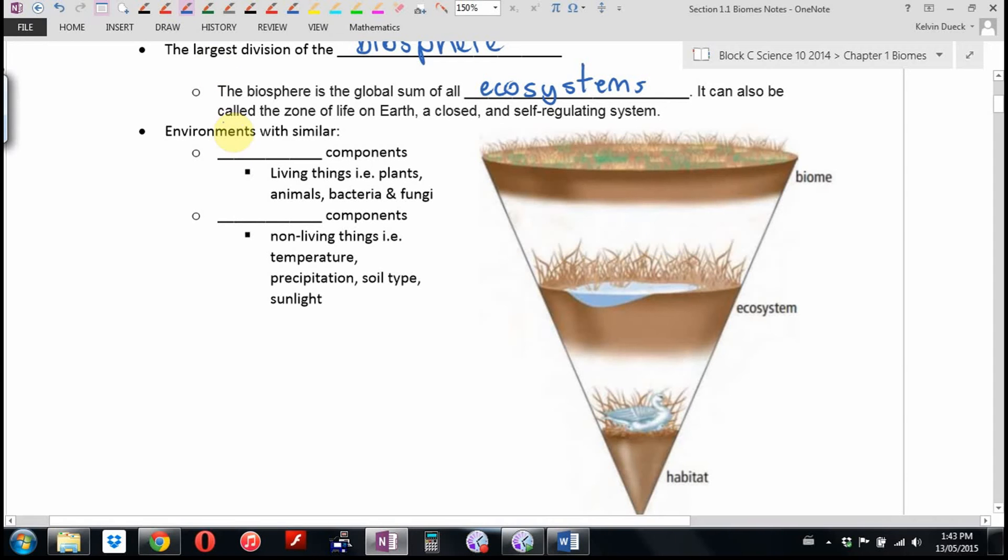What makes up a biome? It's when you have environments with similar biotic components. That's the fancy word for living things, plants, animals, but even smaller, bacteria and fungi. And then non-living things. Now, the fancy word for non-living components, abiotic. Because if you put an A in front of a word, that means the opposite of or non.